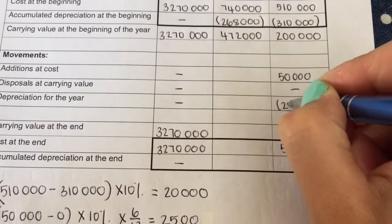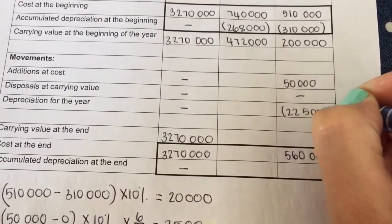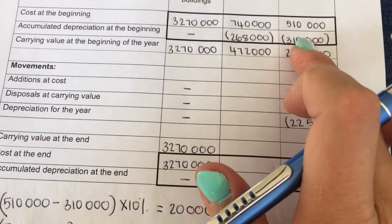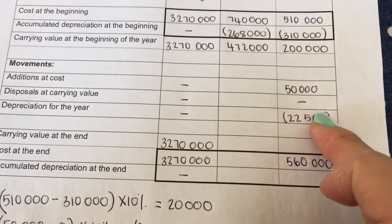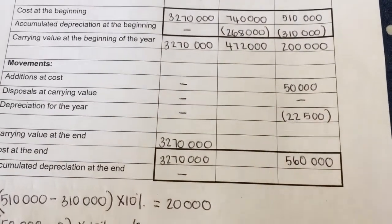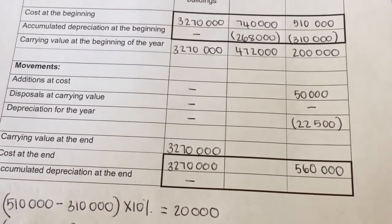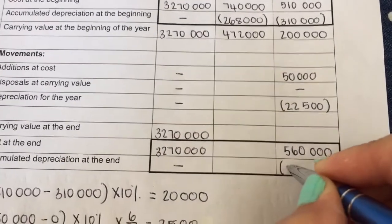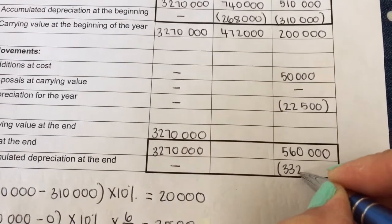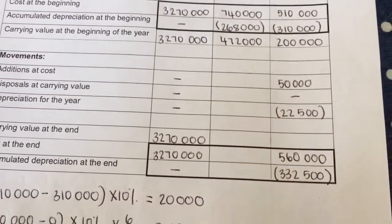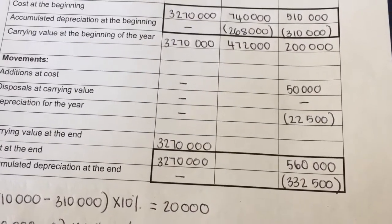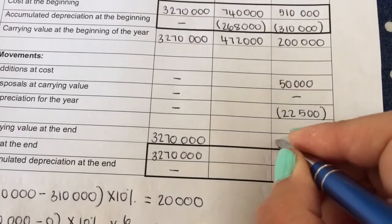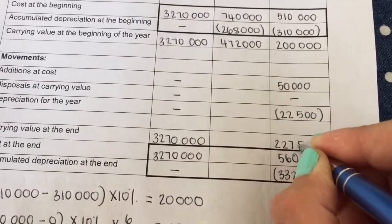No disposals. 22,500 is my depreciation for the year, and then my depreciation at the beginning of the year plus the one during the year will give me my depreciation at the end of the year. The reason why I can work from top to bottom is because I did not sell any of my assets under equipment. If I did, it works a bit differently, but it's now nice and straightforward and I can work out the carrying value at the end of the year.